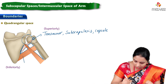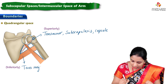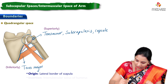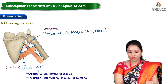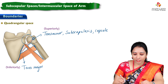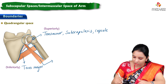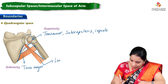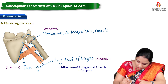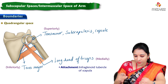The inferior boundary is teres major. Teres major originates from the lateral border of the scapula and is inserted to the intertubercular sulcus. Medially, we can see the long head of triceps, which runs along the posterior compartment of the humerus. It attaches to the infraglenoid tubercle. So the long head of triceps forms the medial boundary.